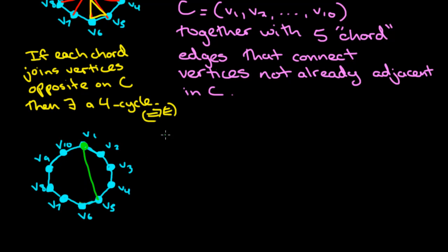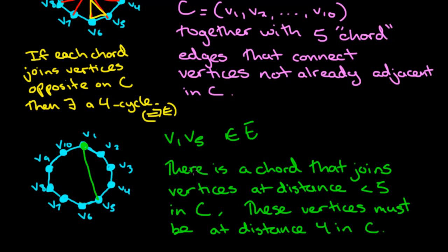So we're going to say that V1, V5 is a chord. So in other words, that is an edge. Another way of saying this same thing is there is a chord that joins vertices at distance less than 5. That was because we know they are not all at distance 5. And these vertices must be at distance 4 because we'd eliminated the case of them being at distance 2 or distance 3. Both of those are impossible.